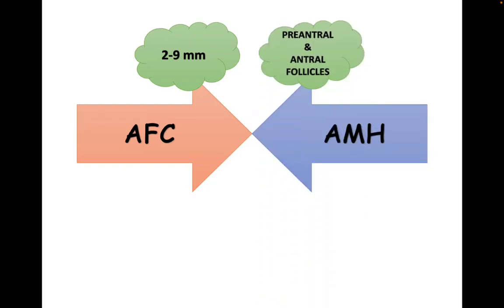And what is AMH? It is basically a dimeric glycoprotein which is a member of the TGF-beta superfamily, and it is produced by pre-antral and antral follicles. So AMH is produced by pre-antral and antral follicles.